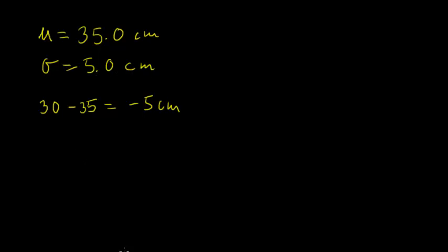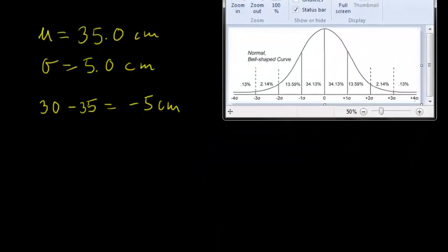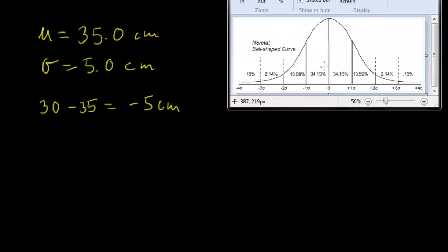Let's take a look at what that means by looking at the normal shaped bell curve. Being one standard deviation below the mean means there are this many newborns below you in head circumference, and this many newborns above you. We need to add up all of the percentages indicated in each of these standard deviation bins.